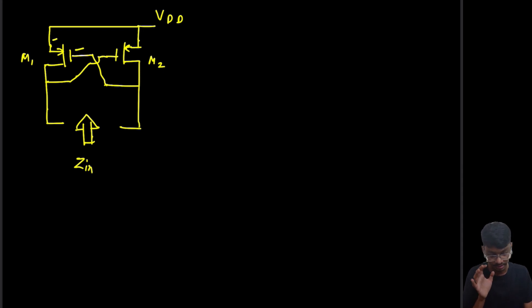Let's first assume the potential across M1 is V_SG1 and across M2 is V_SG2. Now, they are not the same because it is cross-coupled, so they are not same.